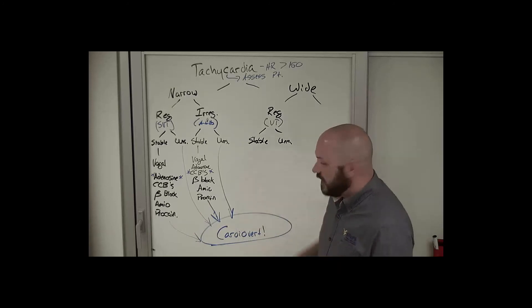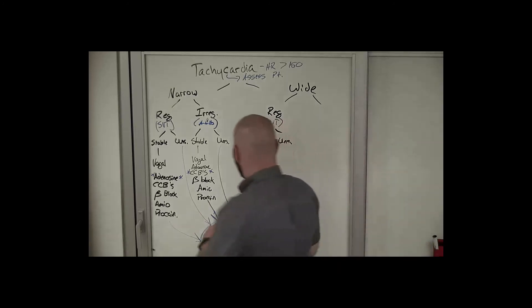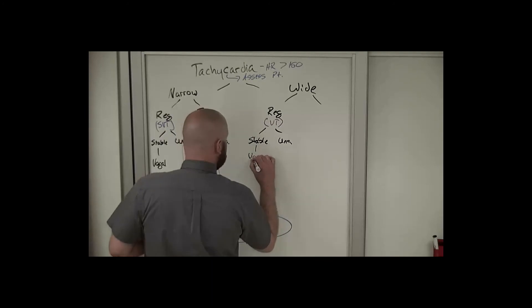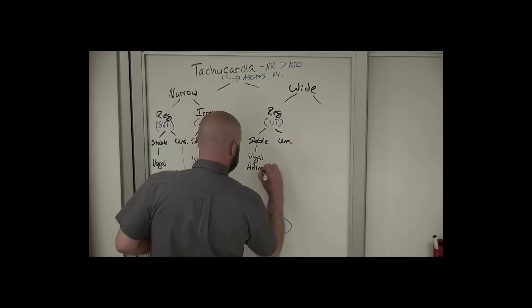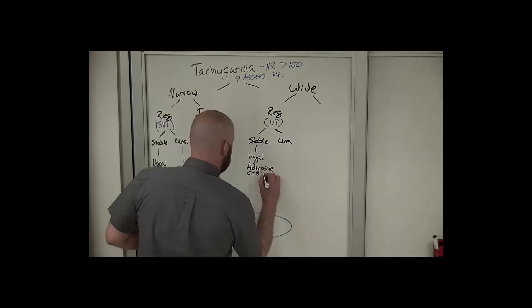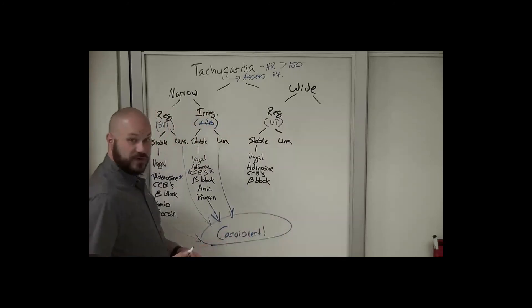Adenosine may not be effective at all. It may slow it down for you to be able to see what the underlying rhythm is. Calcium channel blockers, beta blockers are still on the list here. The drug of choice here though is amiodarone.